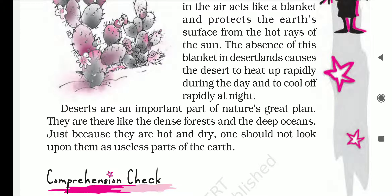Deserts are an important part of nature's great plan. They are there like the dense forest and deep oceans. Just because they are hot and dry, one should not look upon them as a useless part of the earth. Actually, they are also an important part of nature because some animals and plants can only survive in these tough conditions. The deserts are like the deep forest or deep sea — though they are ignored by people because of the heat and dryness, they have their own importance in nature, with hidden beauty in the form of plants, animals, and small hills and mountains.